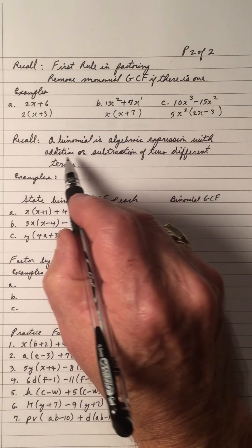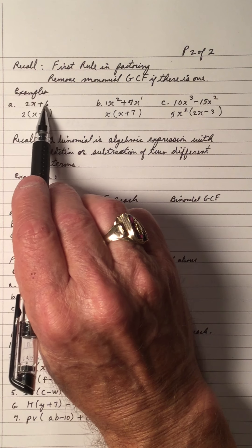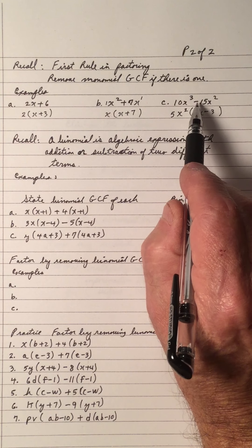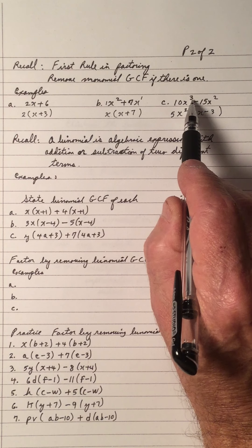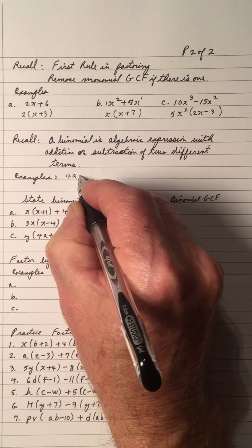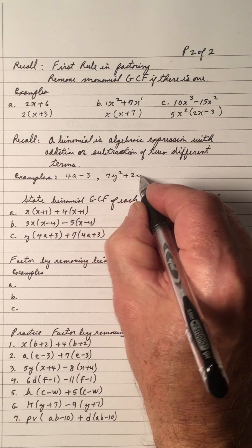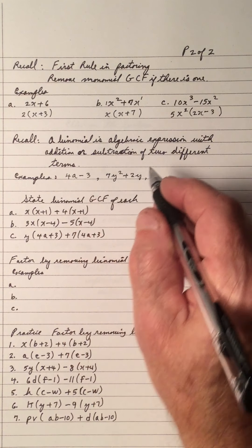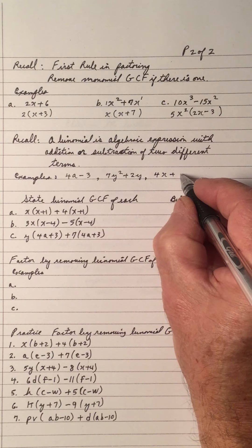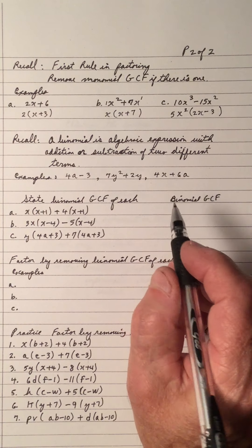Recall: a binomial is an algebraic expression with two different terms separated by addition or subtraction. You cannot add unlike terms. Examples include 4a minus 3, or 7y squared plus 2y — two terms separated by a plus or minus sign that are different. Another example is 4x plus 6a. These are all binomials.